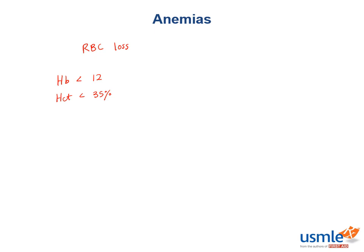So now we should talk about why do we even use hemoglobin and hematocrit to define anemia? Well, remember that red blood cells are literally almost entirely made up of hemoglobin. So by measuring the amount of hemoglobin in the blood, you're pretty much indirectly measuring how much of the blood is made up of red blood cells. And hematocrit is just the ratio of red blood cells to the volume of blood, which is just a percentage, so you get an idea of how much red blood cells there are. Normally about 40% of your blood is red blood cells.